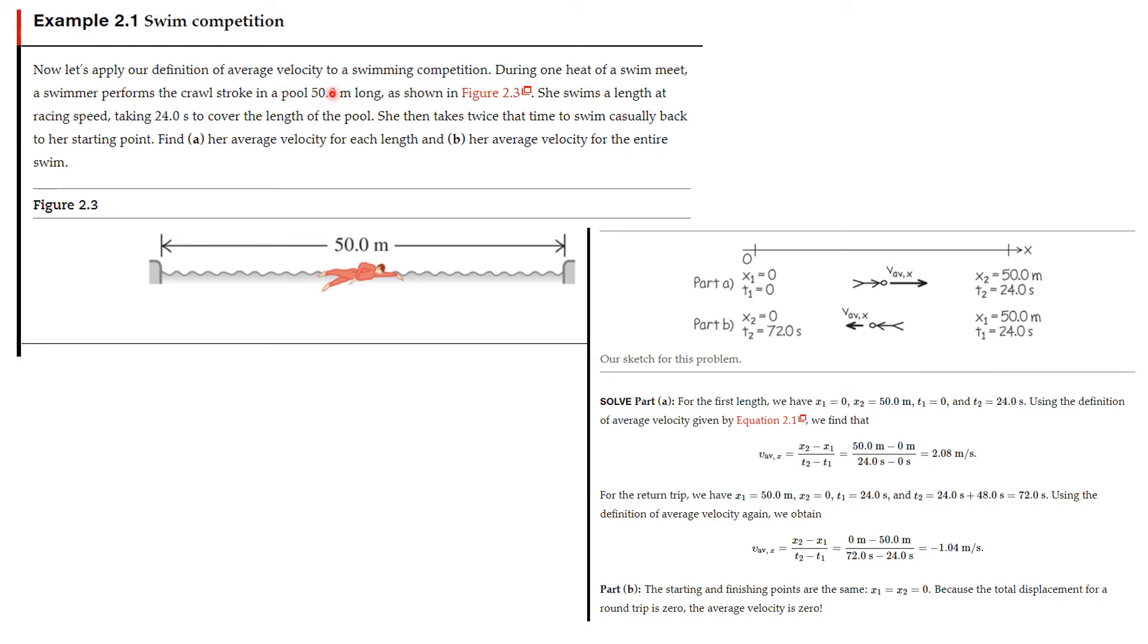So let's do a problem, and we'll apply our definition of average velocity to a swimming competition. During one heat of a swim meet, a swimmer performs the crawl stroke in a pool 50 meters long. So they're doing a race here, and they're doing a crawl stroke 50 meters, and you see the picture. She swims a length, that's one lap, one length of the pool, at racing speed, and it took her 24 seconds to cover the length of the pool, which was 50 meters. She then, after finishing her race, takes twice that time to swim casually back to her starting point and get out of the water.